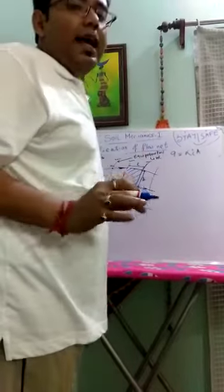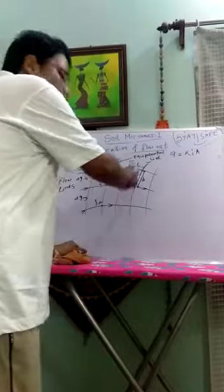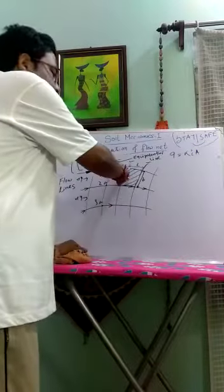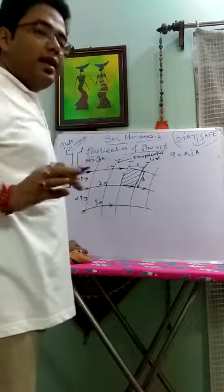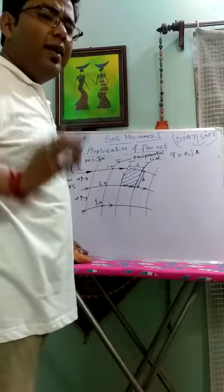And we consider our element. This one, its head difference is del H and its length is L. That's why I will be del H by L.